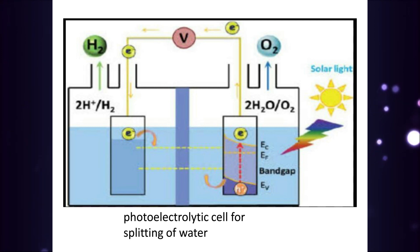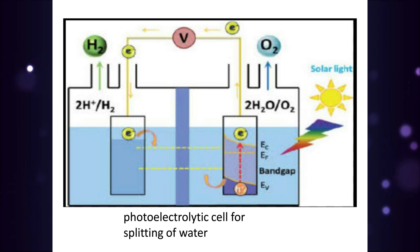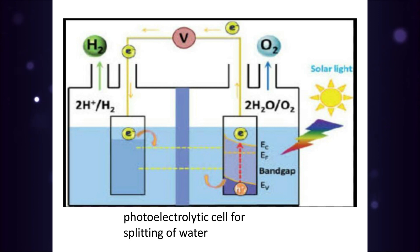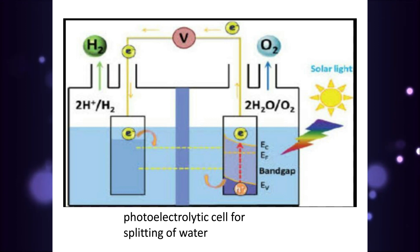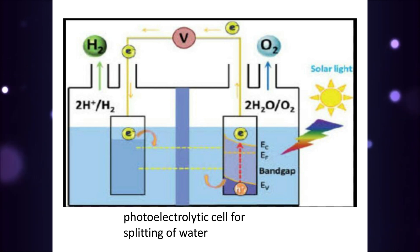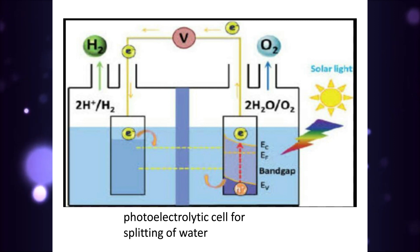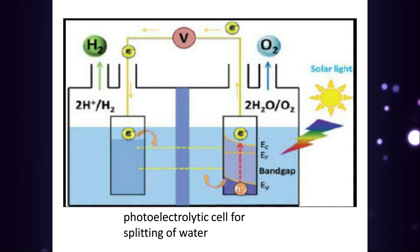The photoanode is made up of a semiconductor, that is titanium oxide, and a platinum electrode is used as the cathode, which splits water to evolve H2. O2 gets evolved at the titanium oxide electrode and H2 is evolved at the platinum electrode. Photons with energies greater than the semiconductor bandgap can be absorbed by the semiconductor, creating electron-hole pairs which are split by the electric field between the semiconductor and electrolyte.